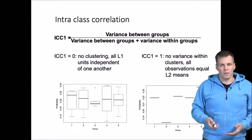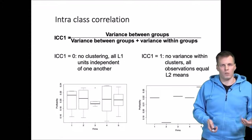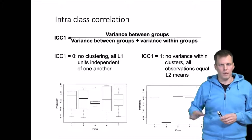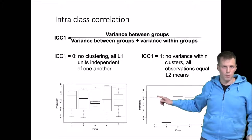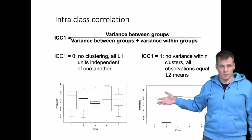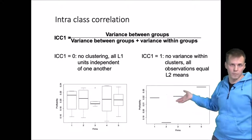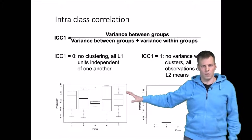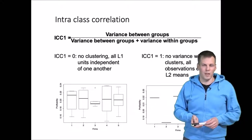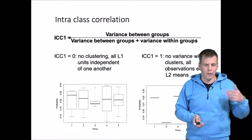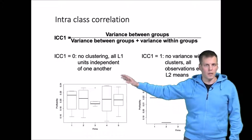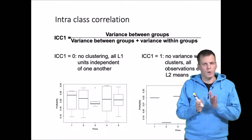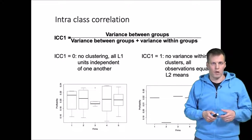Why do people calculate ICC1, and how is it typically reported? The first role of ICC1 is to decide whether something needs to be done about clustering. If all observations within a cluster are the same, you can just pick one per cluster for regression. If ICC1 is 0, there is no clustering effect and it may be safe to skip multilevel modeling. However, if ICC1 is somewhere in between — say around 50% — you typically need to account for levels in your analysis.